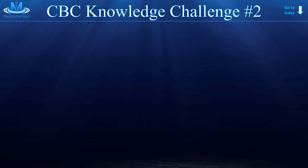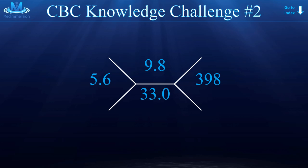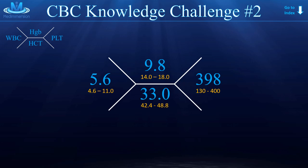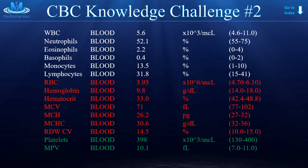Next up, knowledge challenge number two. Let's see if we can figure this one out. The white blood cells are in normal range, so it's probably not an infection. However, the hemoglobin and hematocrit are too low — so this is an anemic patient. The platelets are also a little bit high, within normal range, but something to think about. If you knew the patient's history you might guess the type of anemia, but if you have no idea, you'll want the entire lab slip.